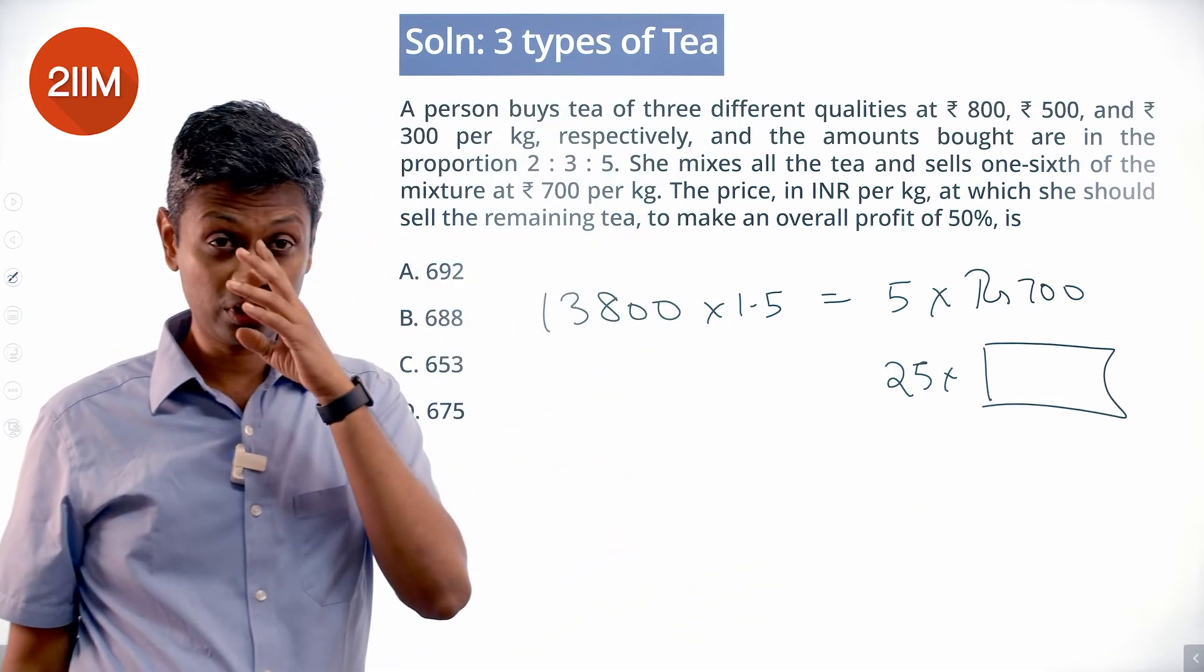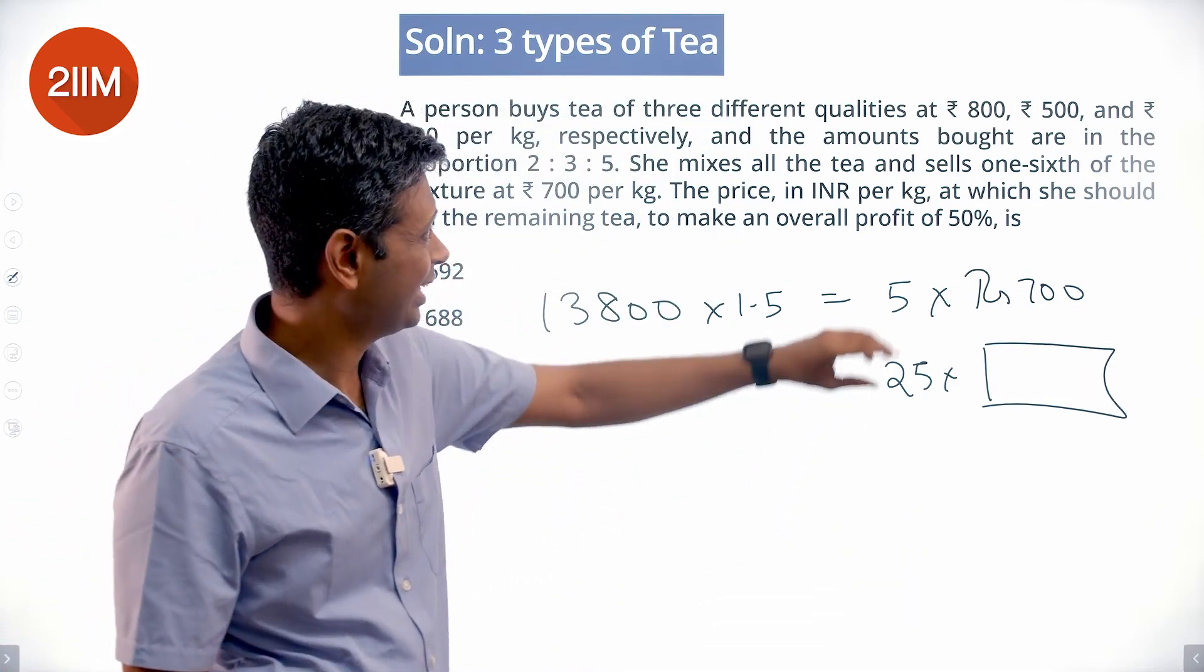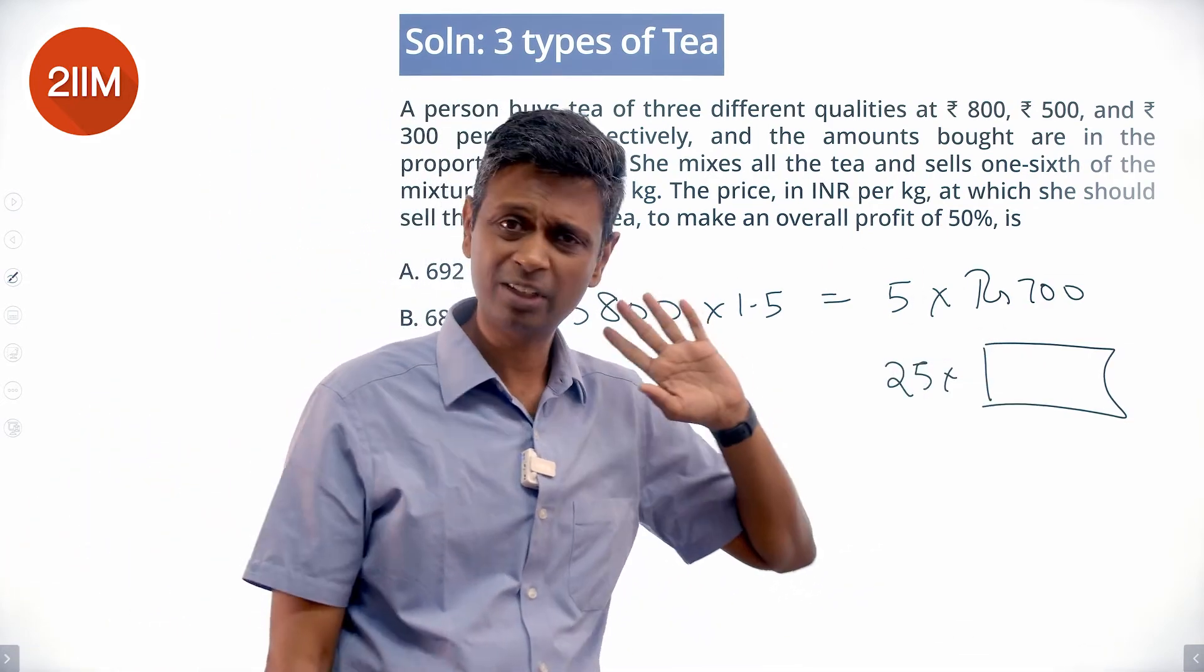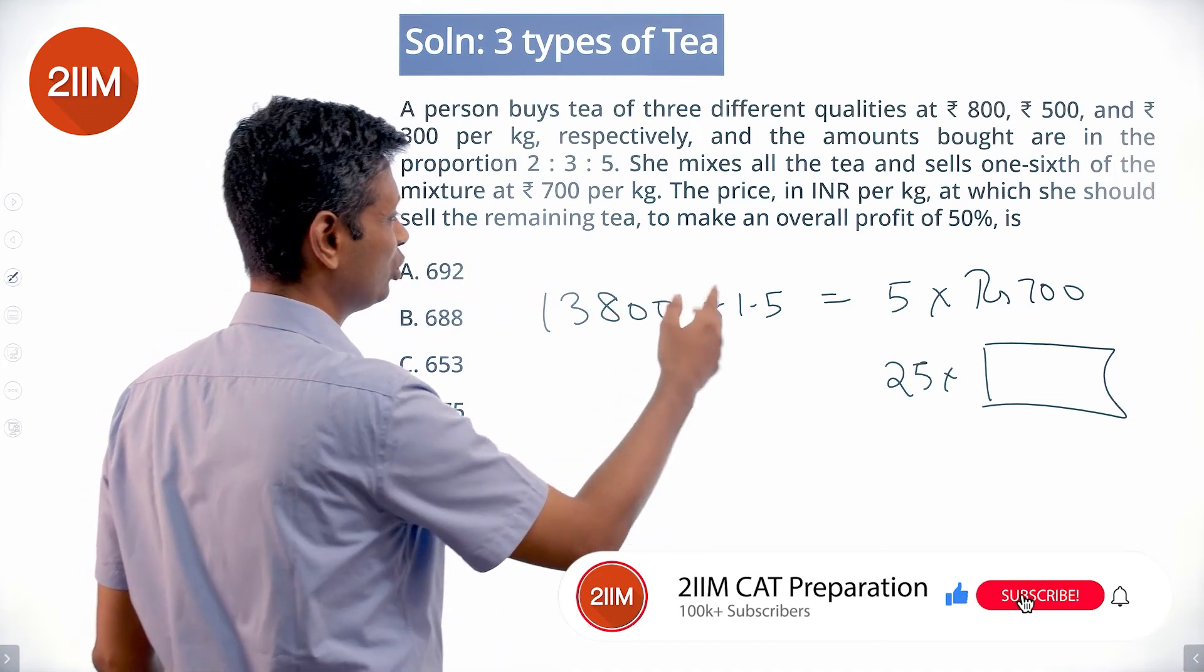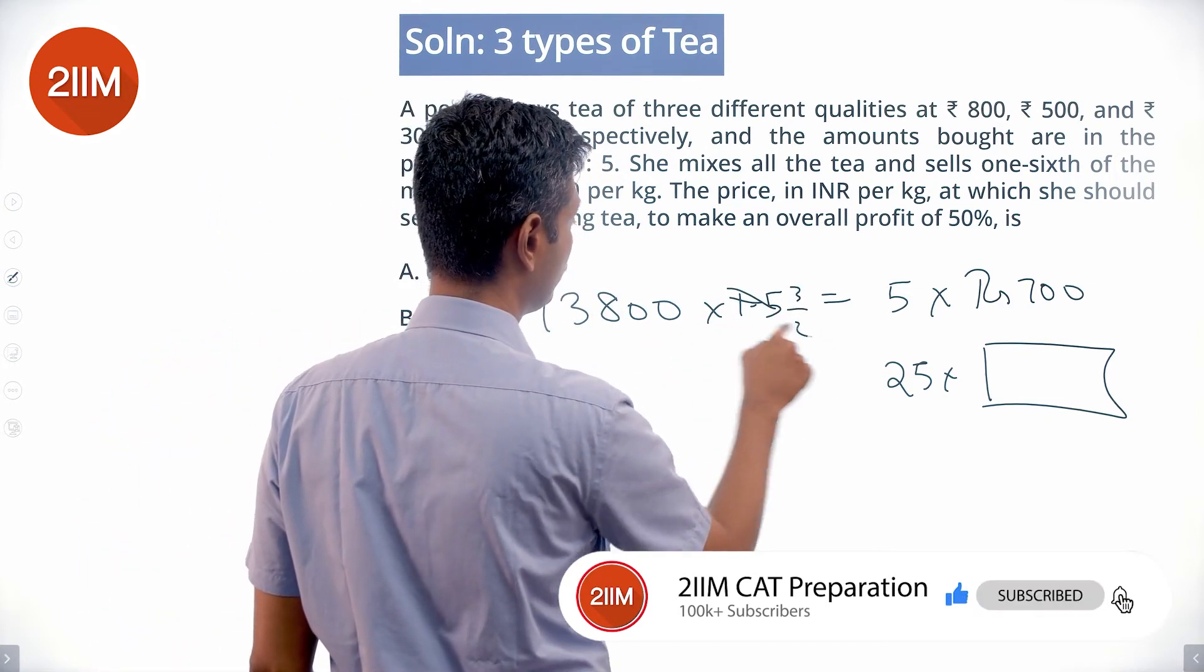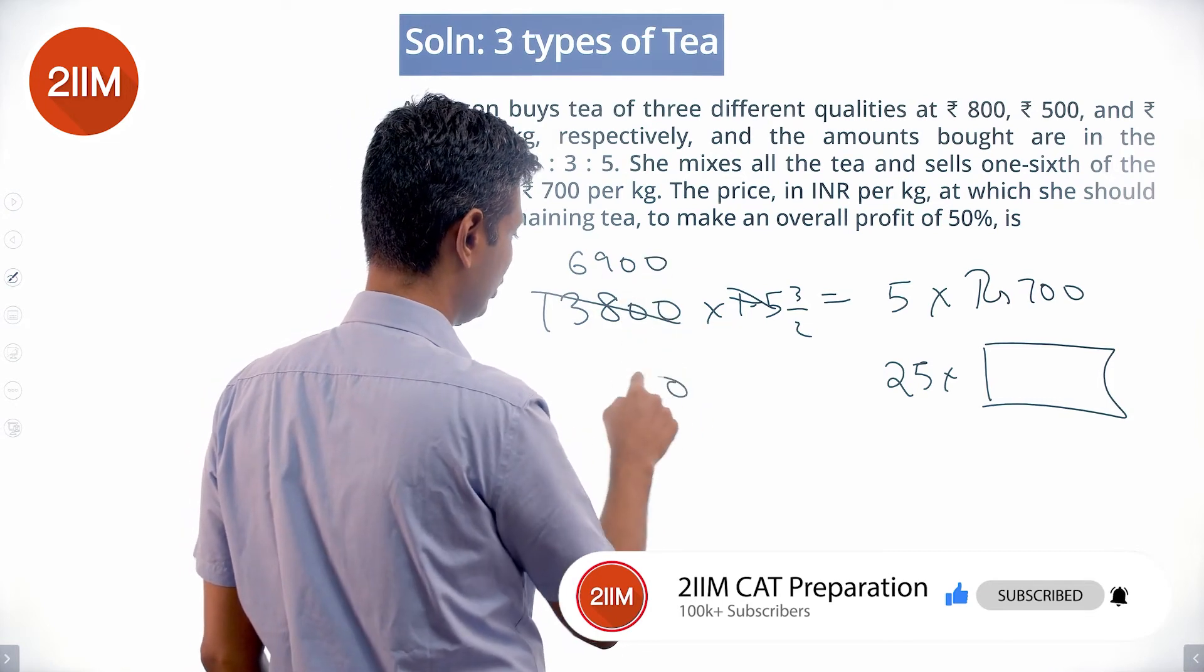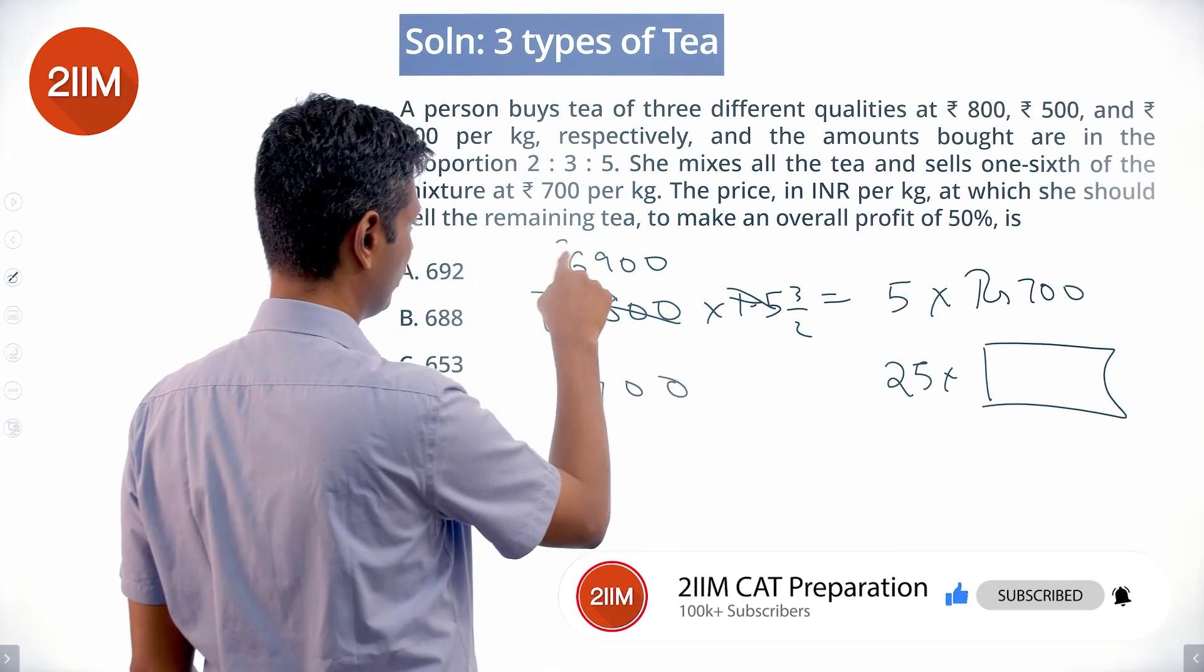So 6900 times 3, which is 20,700. 5 times 700 equals 3500 plus 25x.